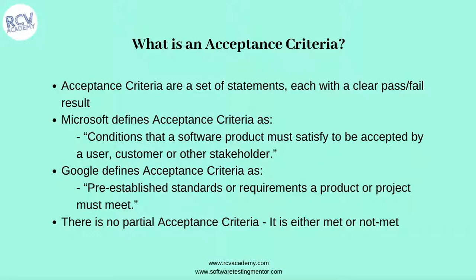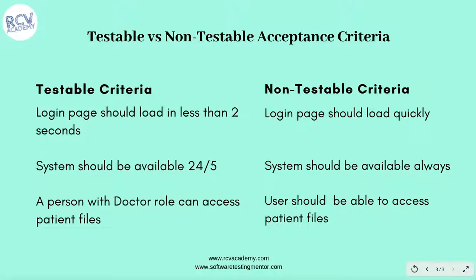As an agile tester, your responsibility is to go through the acceptance criteria and the user story, get involved in discussions, and ensure that all the acceptance criteria and details mentioned in the user story are testable. If they are not, you need to ask questions to clarify the details so that any non-testable acceptance criteria becomes testable.